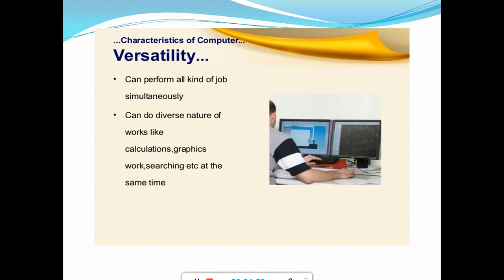You can do diverse nature of work like calculations, graphics work, searching. You can even search on the net. You can do many things in a computer at the same time. Whereas if you compare this characteristic with human beings, humans cannot do multiple works at one time. If you are doing one work, you have to complete that work, then proceed to another work. But a computer can do many works at the same time.